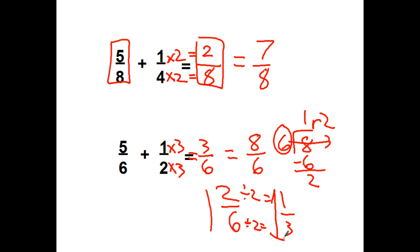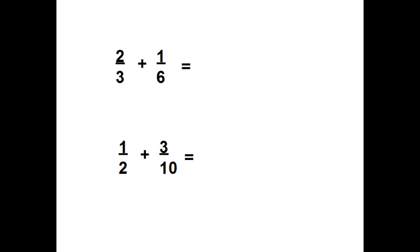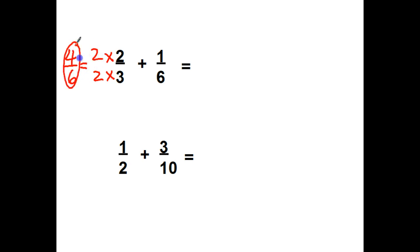Whenever you're simplifying in a mixed number, make sure that the whole number stays the same. Here's something for you to try out — stop the video and you try it. 3 times 2 is going to get me to a 6, so I'm taking the bottom times 2 and the top times 2, and over here I got 4 sixths. 4 sixths plus 1 sixth equals 5 sixths. And that's as simple as it can go.